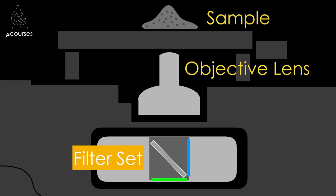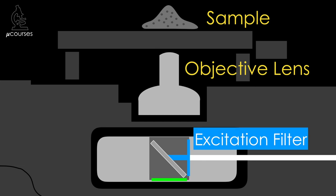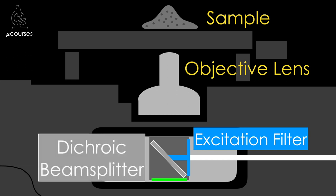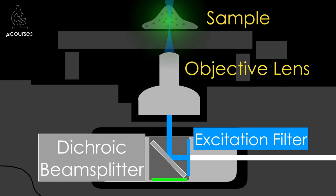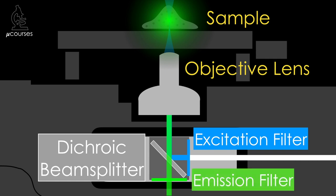The filter set is made up of three optical elements. Light from the light source hits the excitation filter, which allows through a range of wavelengths to excite the sample. This excitation light then hits the dichroic beam splitter, which reflects the excitation wavelengths through the objective lens to the sample. The sample absorbs the light and emits longer wavelengths which, if collected by the objective lens, pass back to the dichroic beam splitter. The dichroic beam splitter is designed to allow the longer emission wavelengths to pass through to the emission filter.